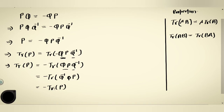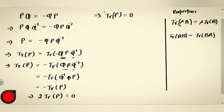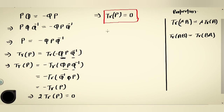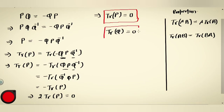So trace of P = -trace of P. Bringing it to one side gives 2·trace(P) = 0, therefore trace of P = 0. Similarly, if we pre-multiply the original equation by P inverse, we get trace of Q = 0. So both results are: trace(P) = 0 and trace(Q) = 0.